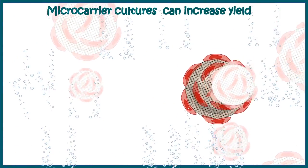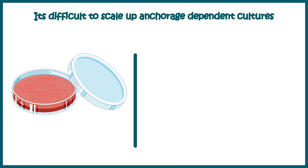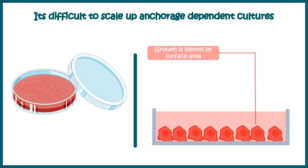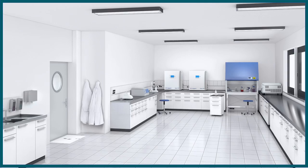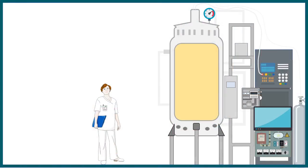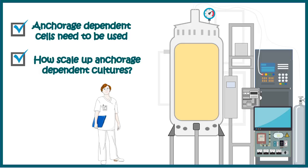Micro carrier culture can give high yield, but we have to understand the real benefit from an industrial point of view. It is difficult to scale up anchorage dependent culture, and the biggest problem is the surface area. Anchorage dependent cells grow on a substratum, so if the surface is limited their growth is also limited. In the lab we can use a bigger flask with a greater surface area, but in industry where we must produce millions of cells and may have no choice other than using an anchorage dependent cell, the answer is using micro carriers.